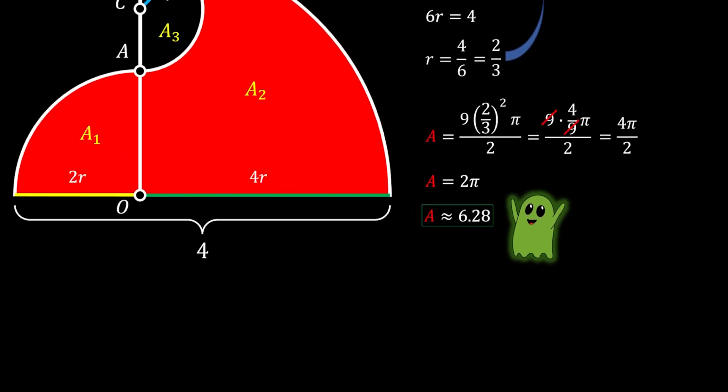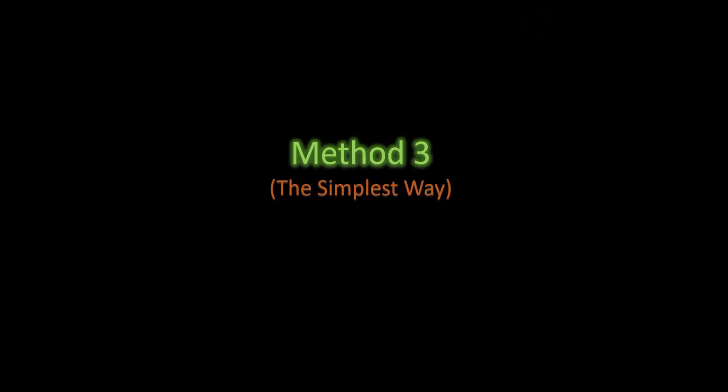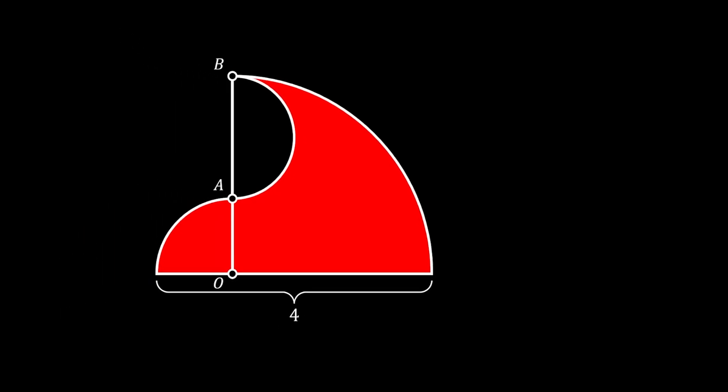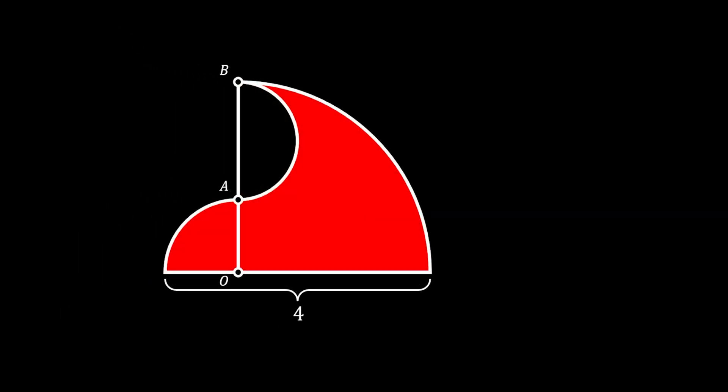Now let's do method number 3, which is by far the simplest way of solving this problem, but it's the least fun way. Nevertheless, I'm going to show you. If we mark all our points as before, we will notice that point A is an arbitrary point. So that means we can again play around with our sketch. Let's first make our sketch a little smaller for better understanding.